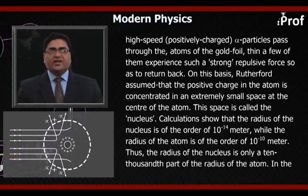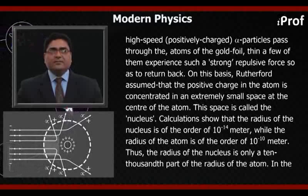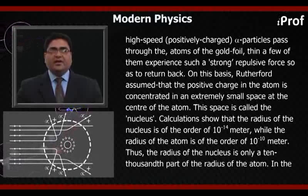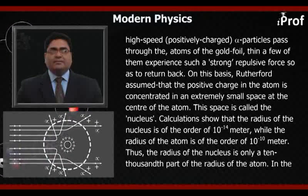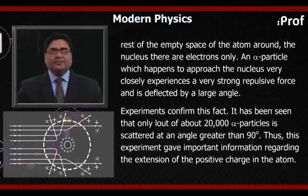Calculations show that the radius of the nucleus is of the order of 10 to the power minus 14 meters, while the radius of the atom is of the order of 10 to the power minus 10 meters. Thus, the radius of the nucleus is only a 10,000th part of the radius of the atom, and the rest of the space inside the atom around the nucleus is empty.